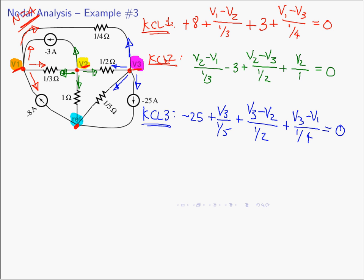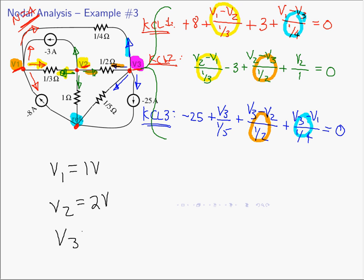Before solving, do a quick consistency check on shared resistor currents. The current through the one-third-ohm resistor appears as (V1 minus V2) over one-third in one equation and (V2 minus V1) over one-third in another — indeed negatives. The one-half-ohm terms give (V2 minus V3) and (V3 minus V2) — negatives of each other. The one-fourth-ohm terms similarly check out. With all consistent, solve the three-equation system. You'll find V1 equals 1 volt, V2 equals 2 volts, and V3 equals 3 volts.